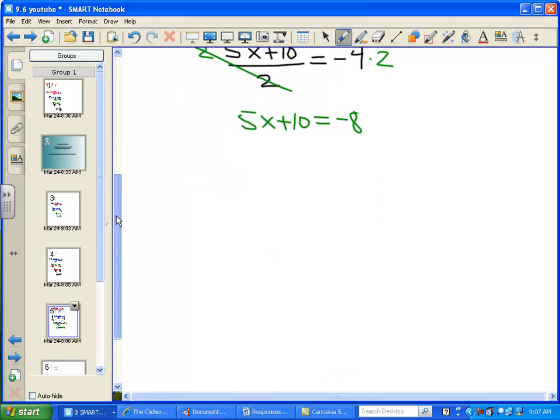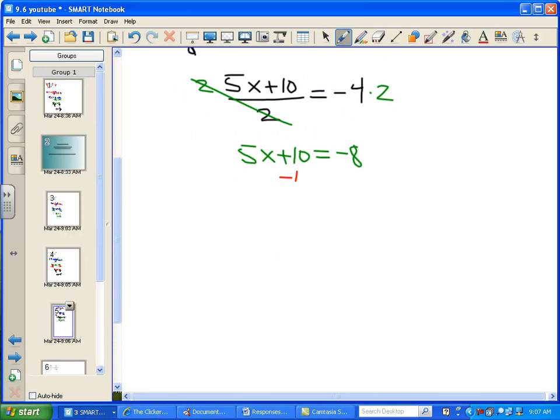And wow, there we go. So now it's one of those algebra 1 two-step problems. 5x equals negative 18, and then by dividing by 5, I've got my solution: x equals negative 18 over 5.